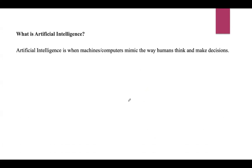Let us define artificial intelligence. Artificial intelligence is when machines or computers mimic the way humans think and make decisions. AI enables computers to understand and analyze data and make decisions without constant human guidance. These intelligent machines use algorithms — step-by-step instructions — to process information and improve their performance over time.